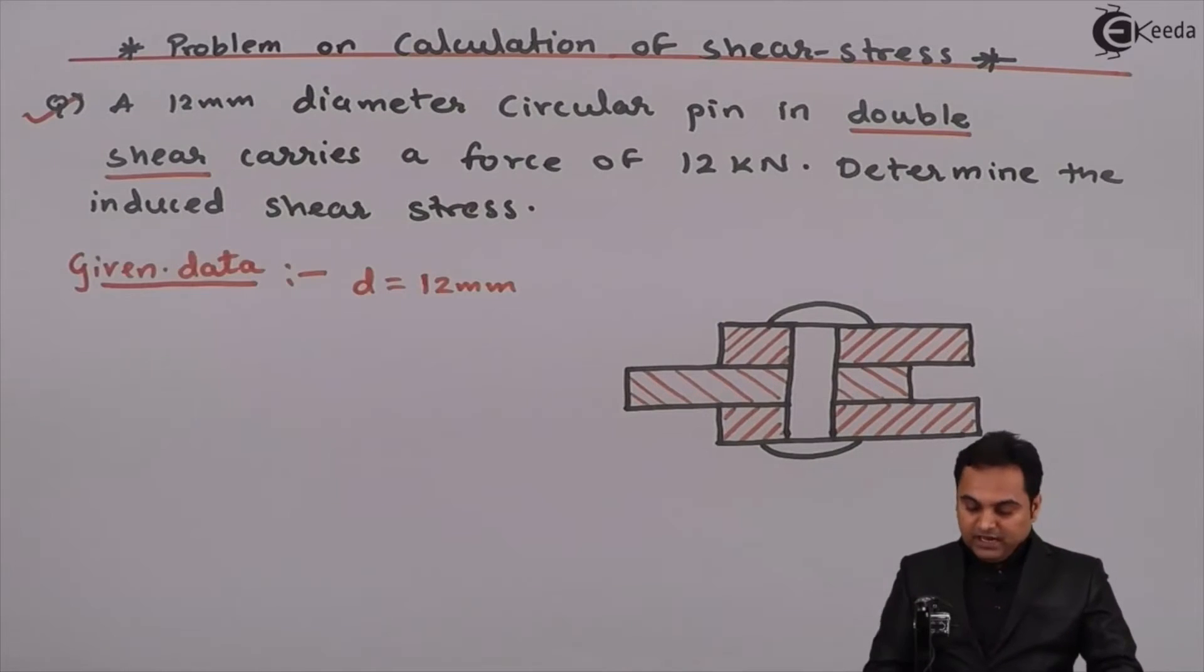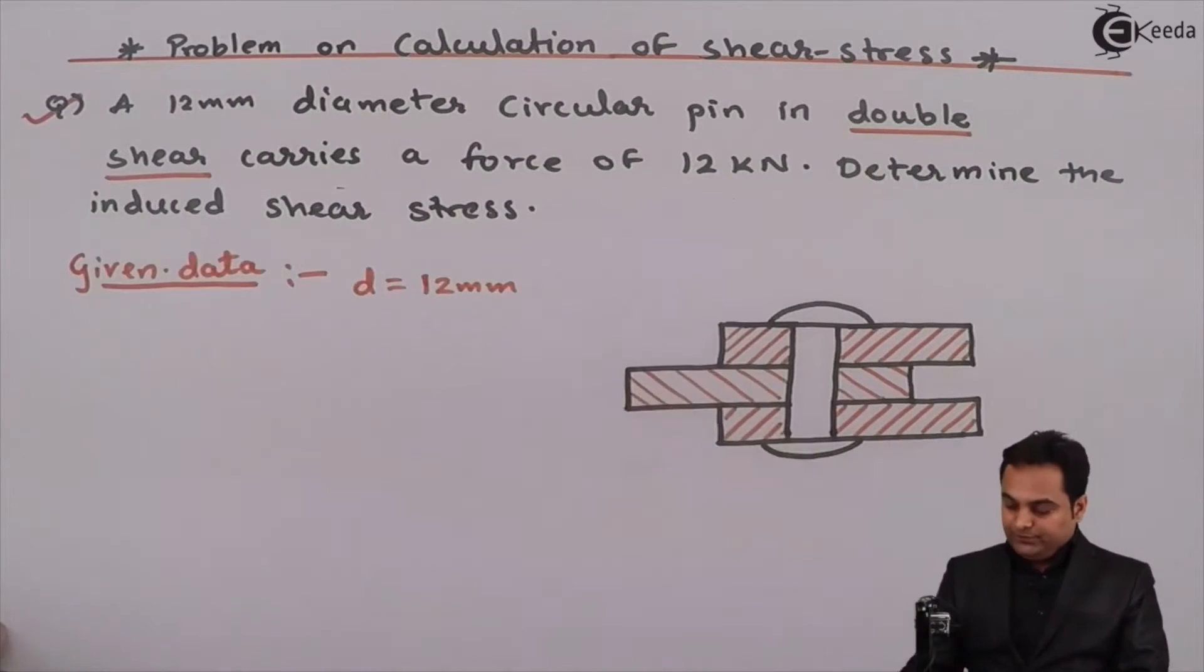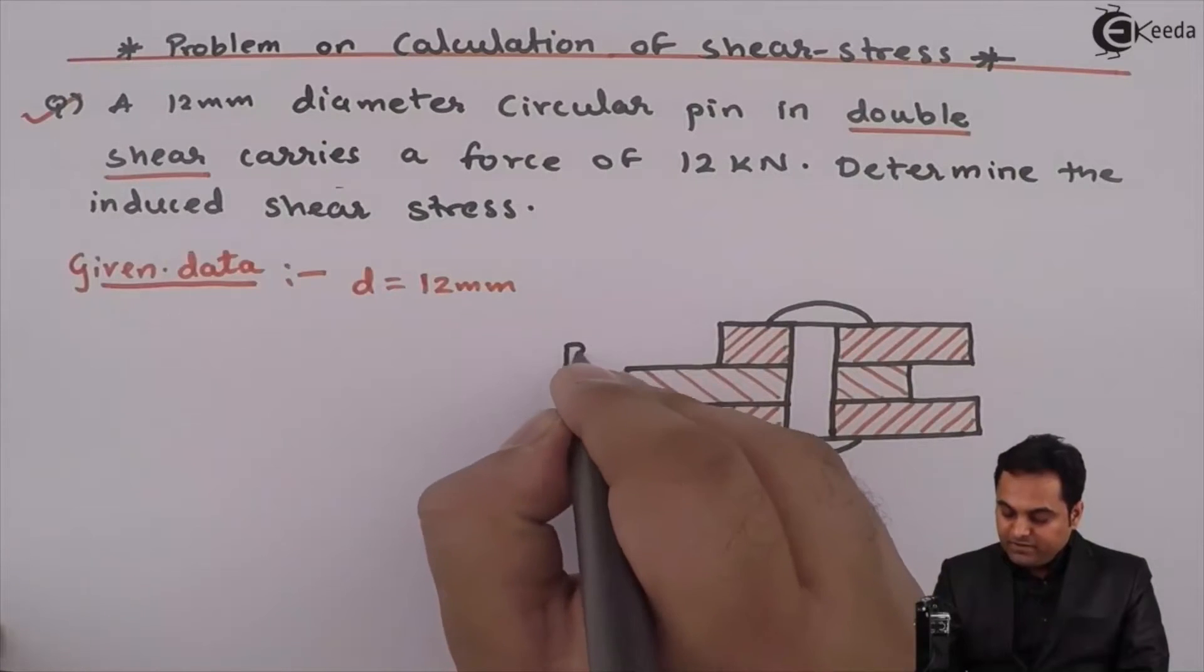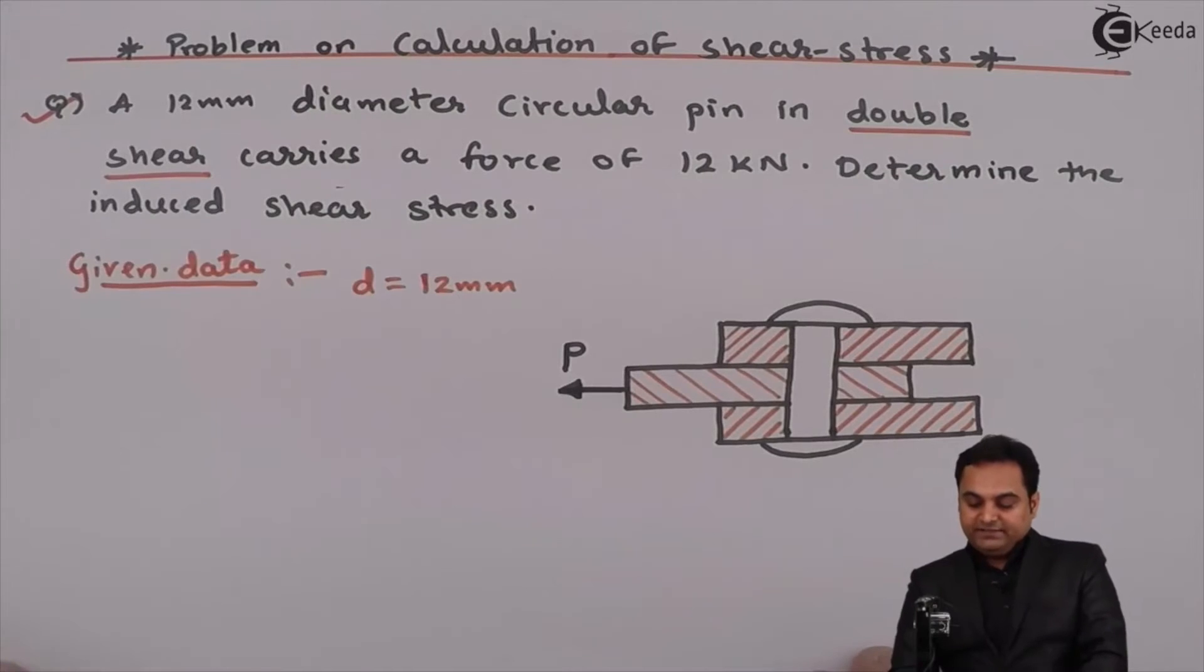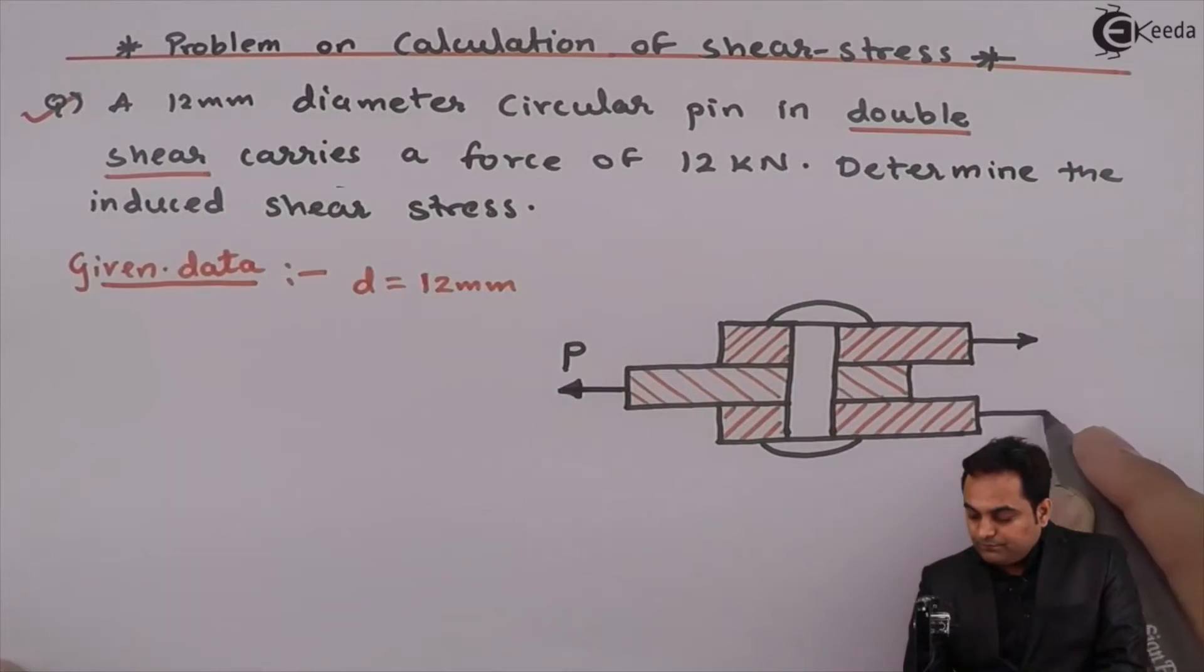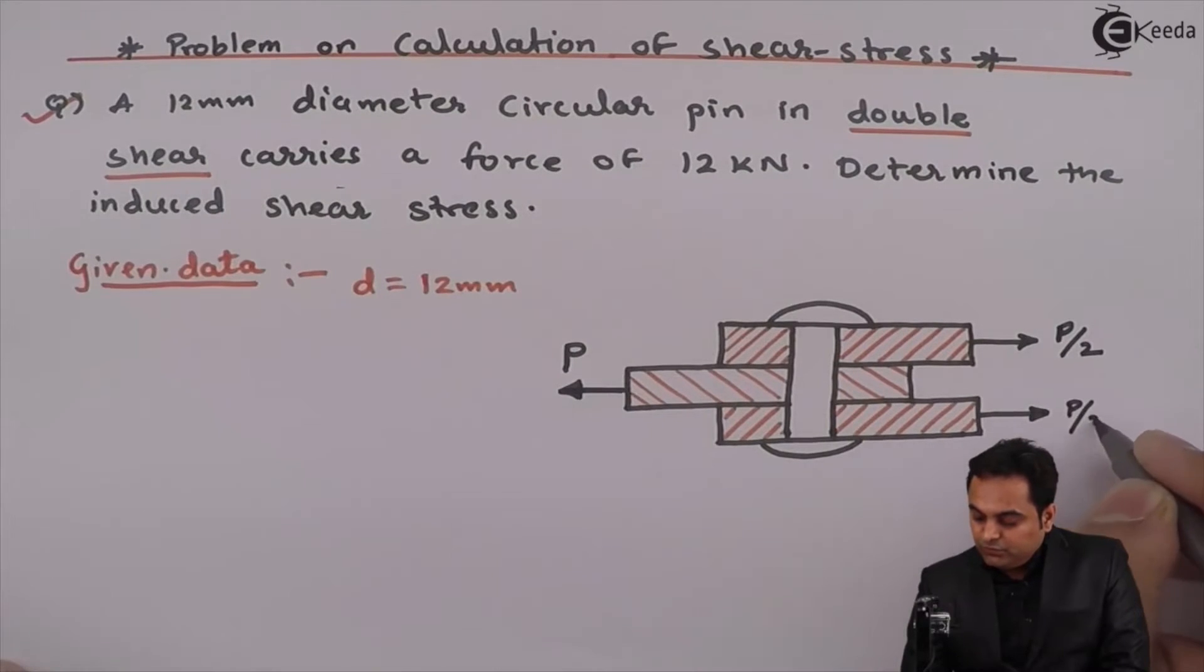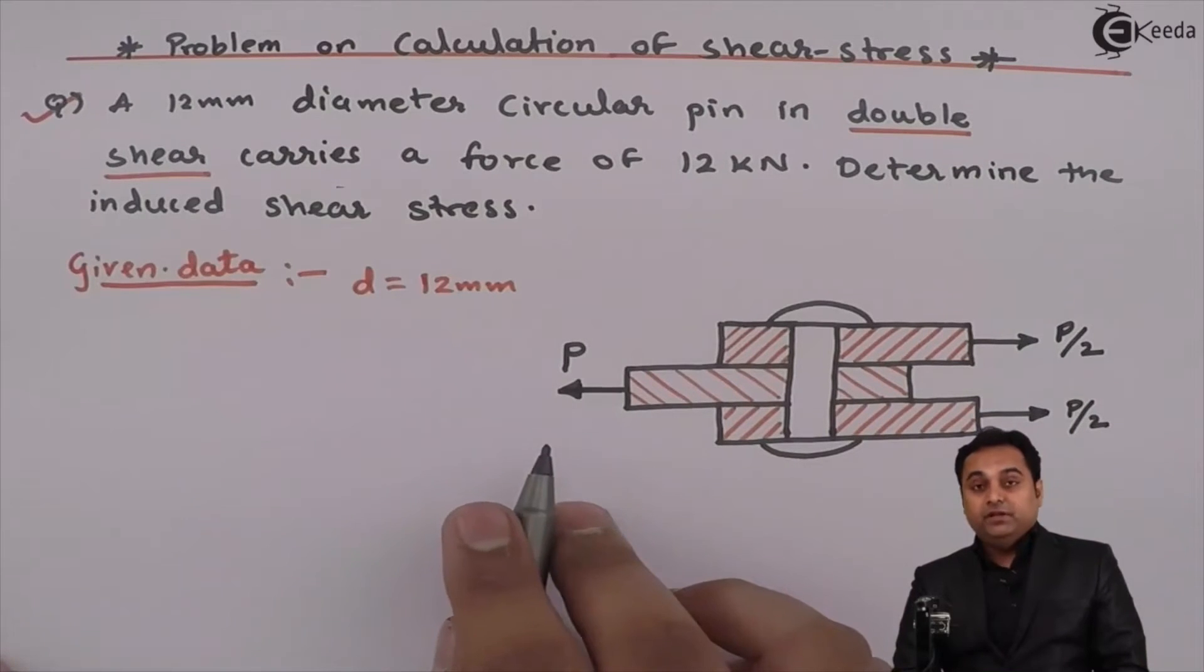Now after this, they are saying that it carries a force of 12 kN. Here I am denoting load P which is acting towards left, P by 2 and P by 2. These loads, if I add them, that will give me the value of P.